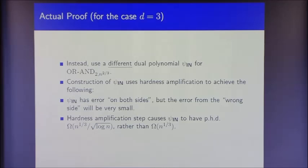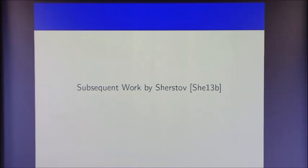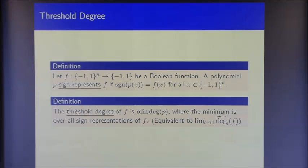Instead, we use a different dual polynomial for the inner function. We use hardness amplification to achieve one where the error from the wrong side is very small — which is all we need for the correlation analysis to go through. The hardness amplification step loses us a factor of √(log n) in the degree, since we use some fan-in from the top gates for hardness amplification rather than degree amplification. But it's only a logarithmic factor.